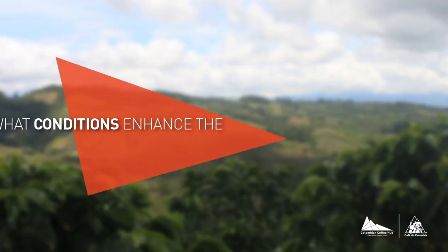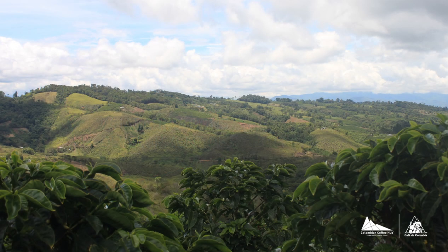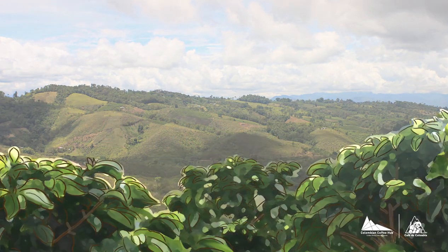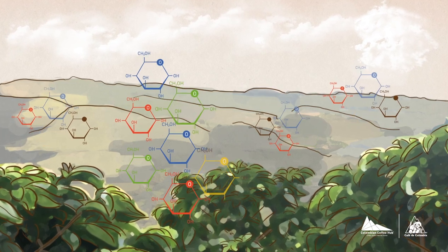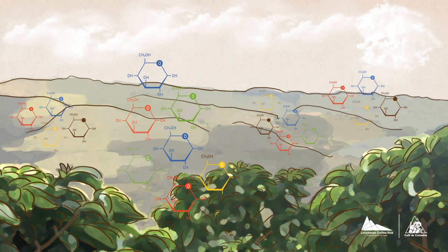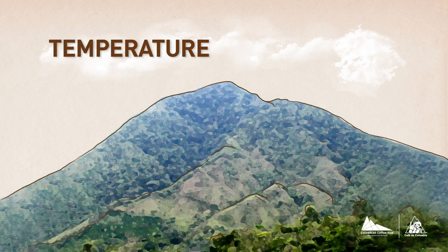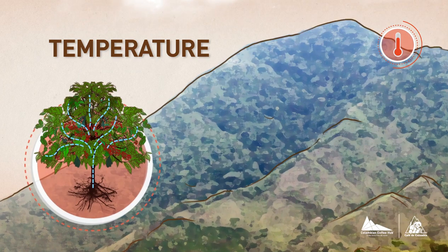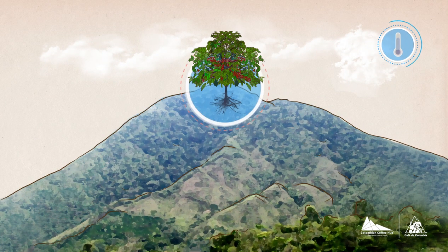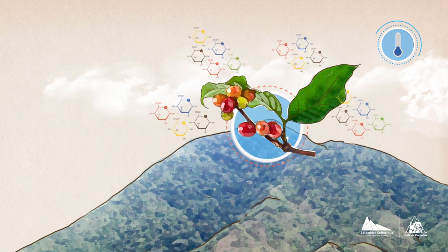What conditions enhance the development of sugars in the plant? All plants produce sugars, but there are some factors associated with the environmental offer that make the plant consume sugars at a higher rate. One of these factors is temperature, which is determinant. At higher temperatures, the plant must work harder and therefore has to consume its sugar reserves. This means that at lower temperatures, there are better chances of sugar accumulation in the cherry.